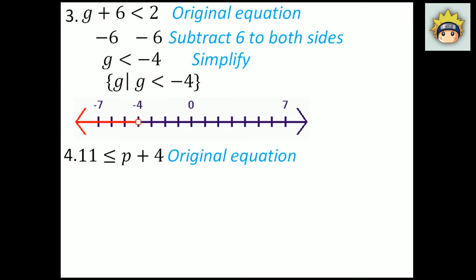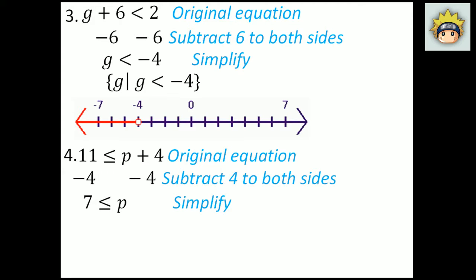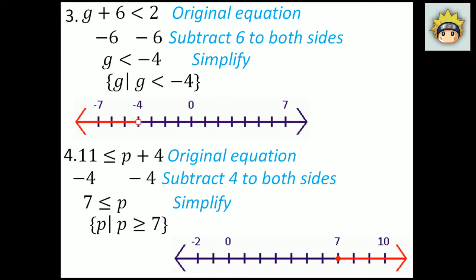Number 4. The original equation is 11 is less than or equal to p plus 4. I'm trying to get p alone, so the inverse property of plus 4 is subtract 4. I subtract 4 from both sides. 11 minus 4 on the left-hand side is 7, which is less than or equal to p. In set builder notation: p, p is greater than or equal to 7. It is a closed dot at 7 on the number line and moves to the right because p is greater than or equal to 7. So 8, 9, 10, 11 and so forth would be valid.